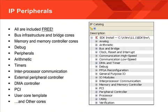The free IP also includes memory and memory controller cores, debug components, peripherals, arithmetic functions, timers, components for inter-processor communication, external peripheral controllers, DMA controllers, and PCI cores. Note that some of the PCI cores do have a charge associated with them. EDK also supports a user core template which allows you to build and customize your own core, your own peripheral.